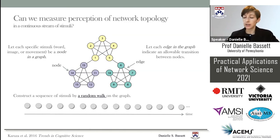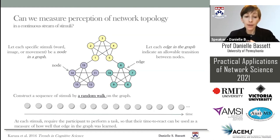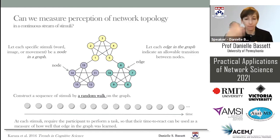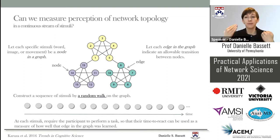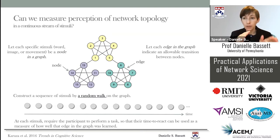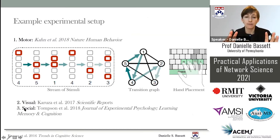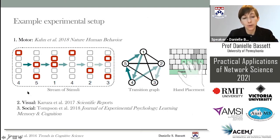At every single stimulus, we require the human participant to perform a little task so we can measure their reaction time. If they react quickly, it means they were expecting that edge and have learned it. If they respond slowly, they were not expecting that transition and have not learned that edge. This setup allows us to probe how the network is being learned. I'm going to focus on the motor version of the task today.